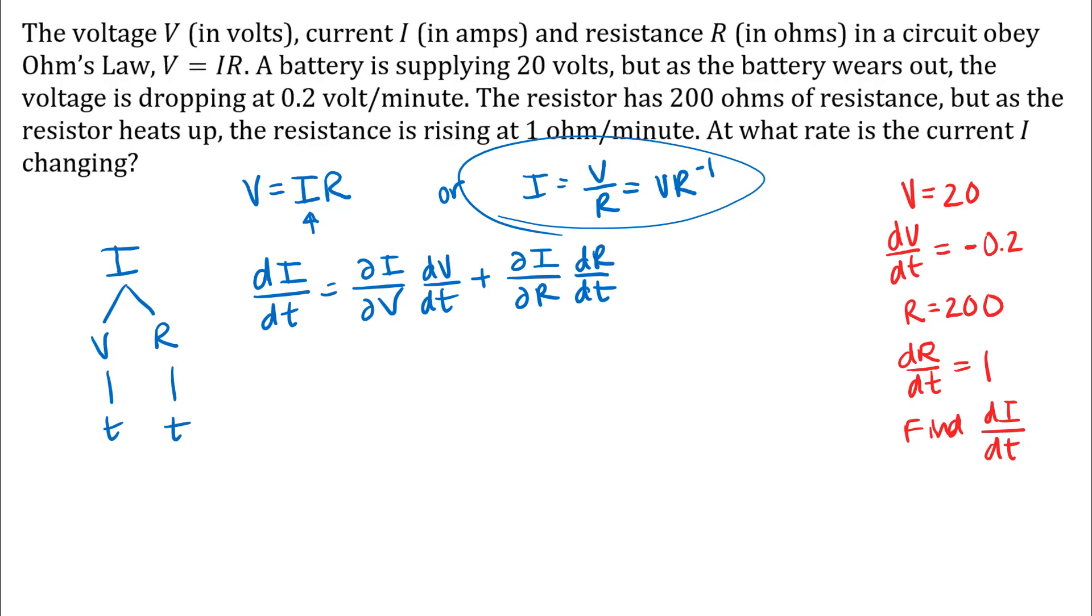Okay, so now I'm going to find the appropriate partial derivatives. ∂I/∂V, so I'm going to differentiate my function I with respect to V, so I'll get R to the negative 1 or 1 over R for that. dV/dt, I have a value that I will plug in for in a little bit.